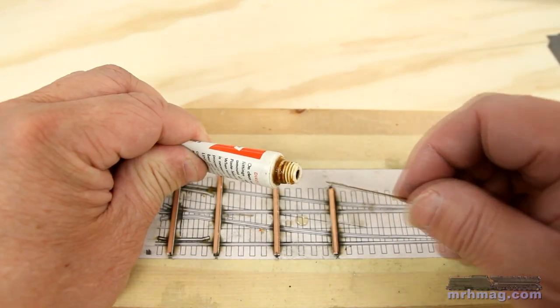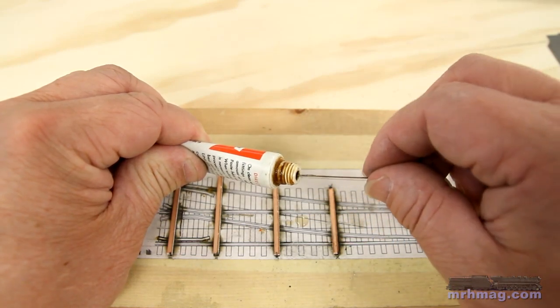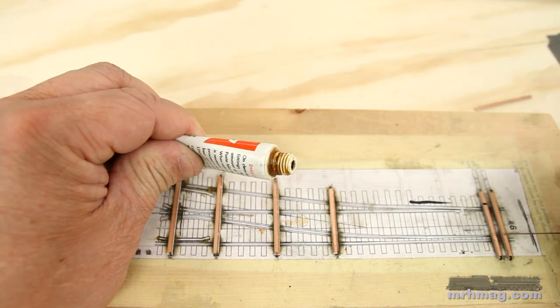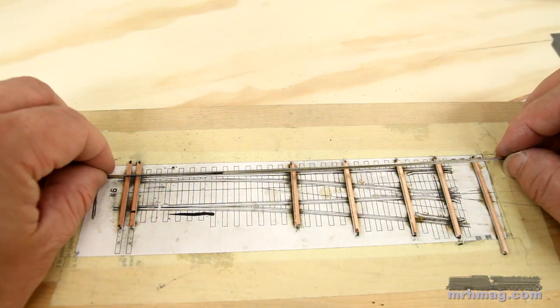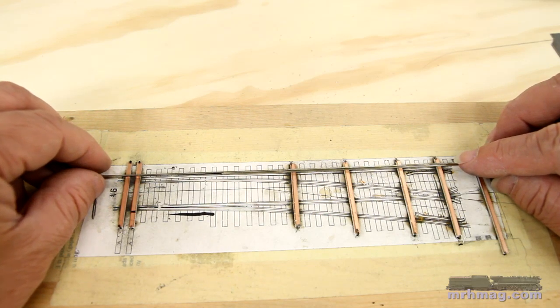Time to install the rails. I use a piece of wire to put a tiny dab of flux on the PC ties where the straight stock rail will be located. Placing the first rail is a little tricky. Line it up over the template and tack solder to a PC tie.